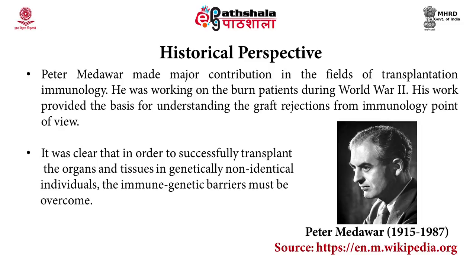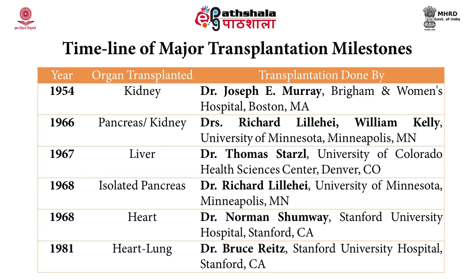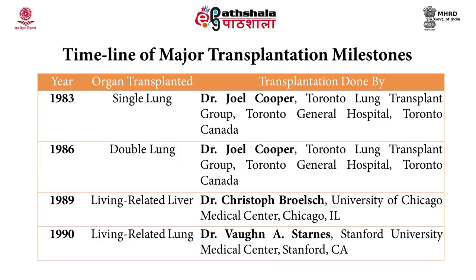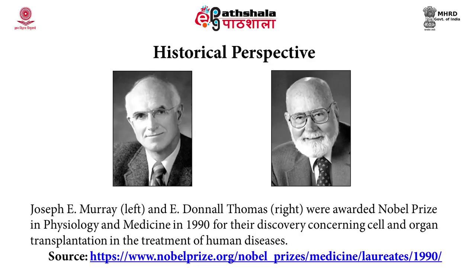Before Medawar, Paget's observation in Kansas City in 1932 made the underlying genetic basis for rejection apparent — that skin allografts between family members tended to survive longer than those between unrelated individuals. It was clear that in order to successfully transplant organs and tissues in genetically non-identical individuals, the immunogenetic barriers must be overcome. The first successful human kidney transplant was carried out in 1954 in Boston between identical twins. In the present scenario, heart, lung, kidney, pancreas, bone marrow, and cornea are transplanted with high degrees of success in non-identical twins as well. Joseph E. Murray and E. Donald Thomas were awarded the Nobel Prize in Physiology and Medicine in 1990 for their discoveries concerning cell and organ transplantation in the treatment of human diseases.